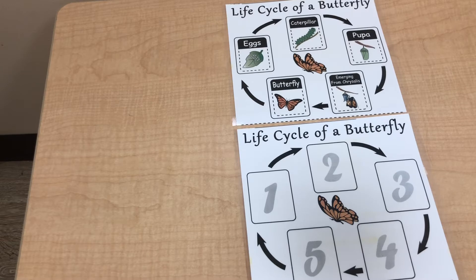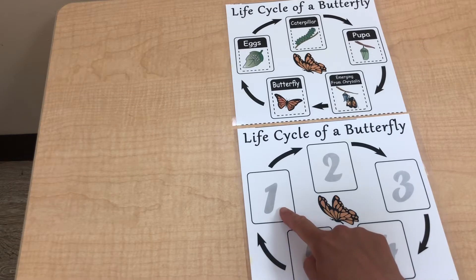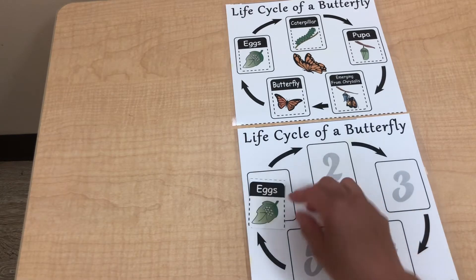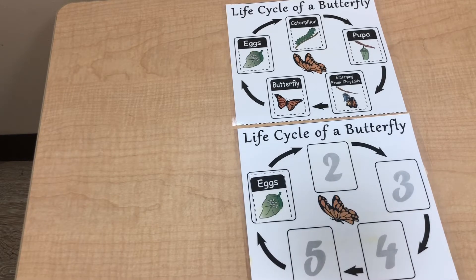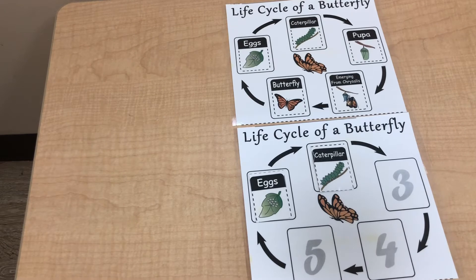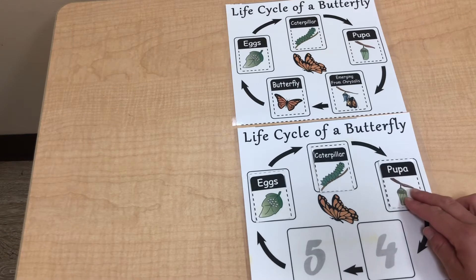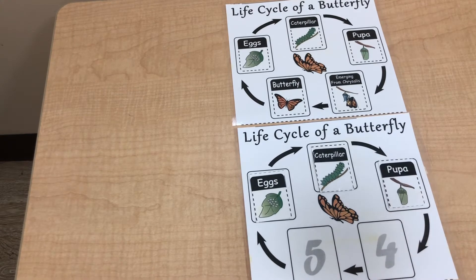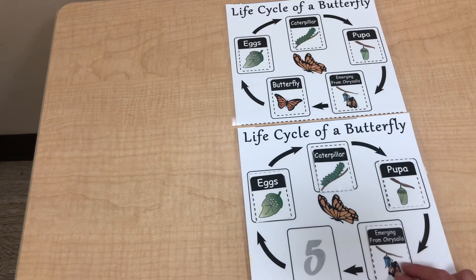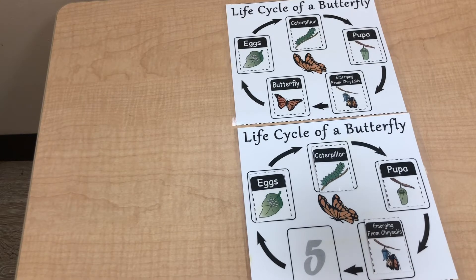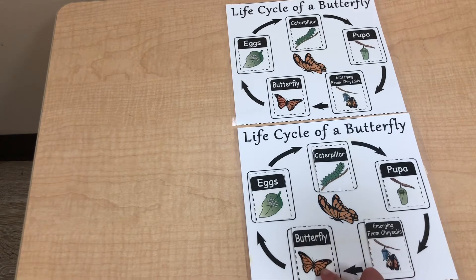Now let's put the cards onto this picture. First is the egg. And then the caterpillar. After the caterpillar we have the pupa. And then we have the chrysalis. And the butterfly is emerging from the chrysalis, and then it will turn into a beautiful butterfly.